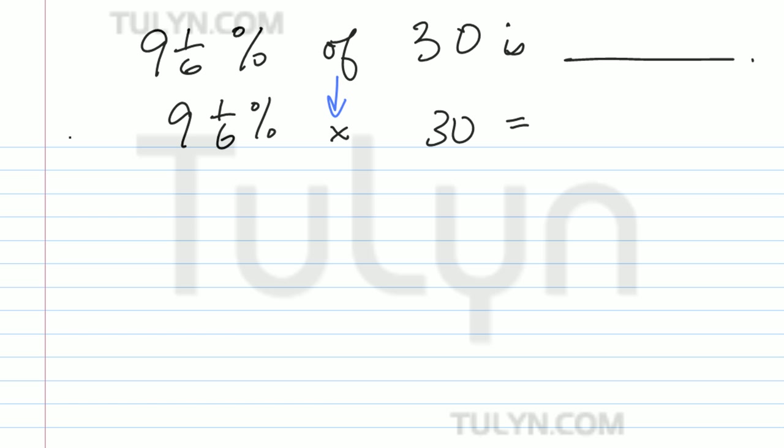9 and 1/6%, now 1/6 is really going to be equivalent to, let's see, 10 is divided by 6 one time. 10 minus 6 is 4, carry down another 0, 6 into 40 is 6 times. 6 times 6 is 36, subtract, 40 minus 36 is 4.